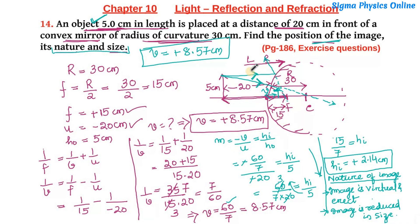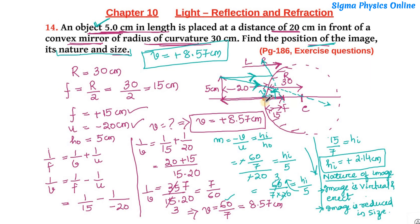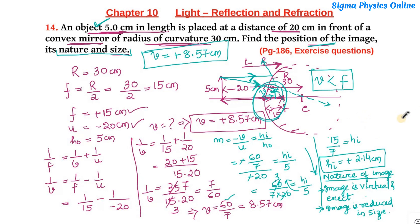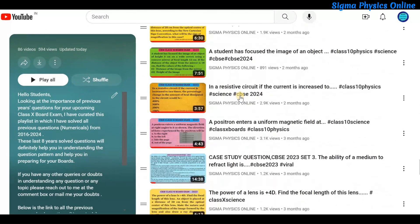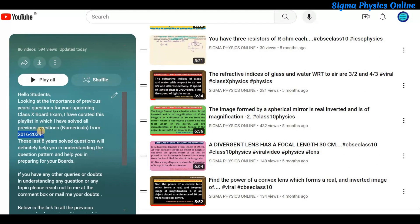Always remember to give the arrowheads while drawing ray diagrams, otherwise marks would be deducted. Also, a very important tip: whatever the position of the object in front of a convex mirror, the image always forms between f and the pole — the image distance is always less than the focal length. This is to be remembered while solving questions related to convex mirrors. If this video was helpful, please like, share, and subscribe. Also watch the playlist of solved physics questions and numericals from previous year board exams — the link is in the description box. Thanks for watching, see you soon.